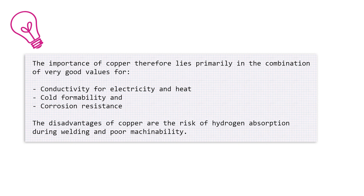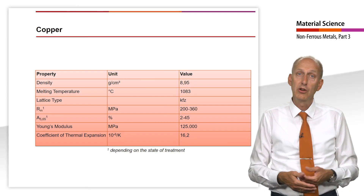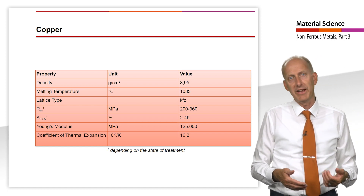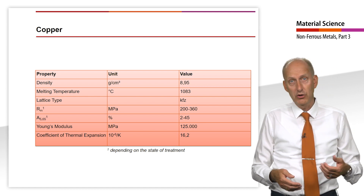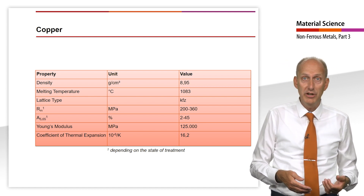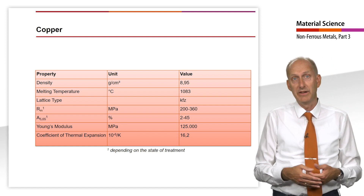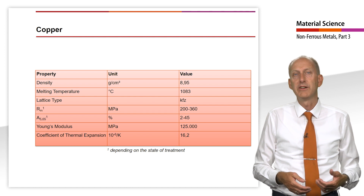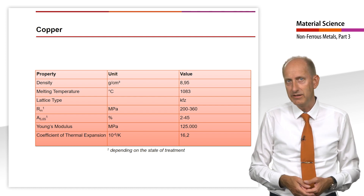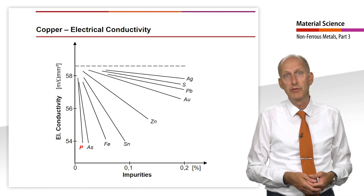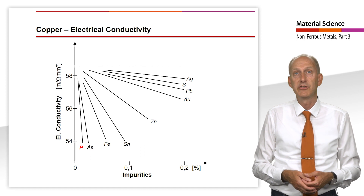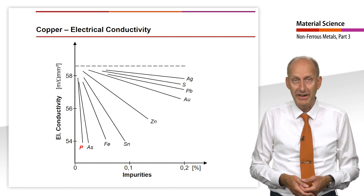The disadvantages of copper are the risk of hydrogen absorption during welding and poor machinability. Copper and copper alloys can be processed in very different ways — many can be cast well, and also cold and hot formed. They can be joined by soft and hard soldering as well as welding. The technically most important property of copper is certainly its electrical conductivity, which is only surpassed by silver.